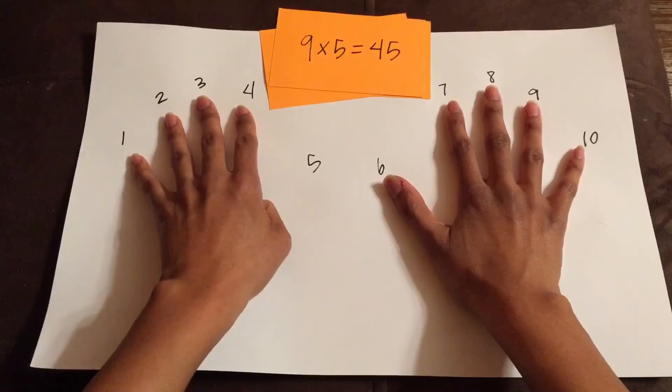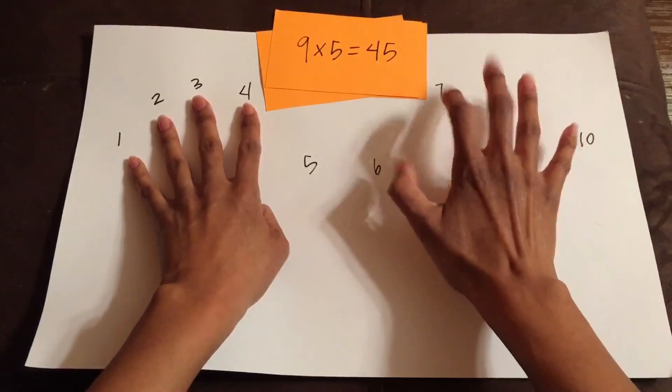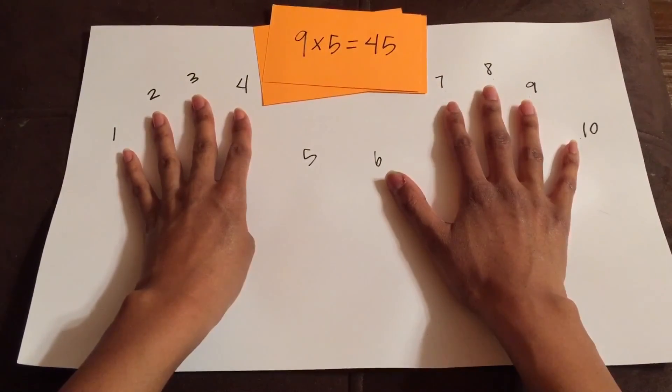On the left side of that finger, I have 4 fingers up, so I know it's going to be 40-something. On the right side of my finger, I have 5 fingers up, so 9 times 5 is 45.